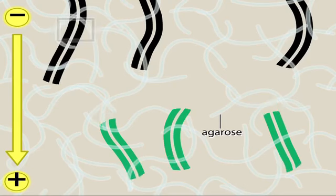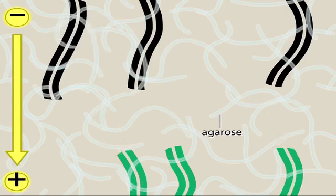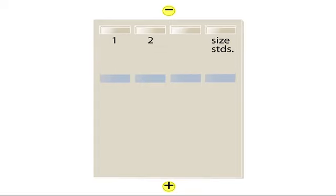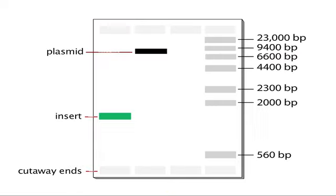The smallest fragments run the fastest as they present less drag through the agarose. Once the blue dye reaches the bottom of the gel, the DNA fragments have separated according to size.